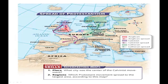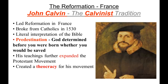You can see on the map the spread of Protestantism — it started in Wittenberg, spread up to Sweden, and some folks in Switzerland heard about it and started the Calvinist movement in France. It went up into Scotland as well. John Calvin led the Reformation in France. He broke from the Catholics in 1530 after reading about Martin Luther. He agreed with a literal interpretation of the Bible but had a new idea called predestination — where God determined before you were born whether you would be saved and go to heaven or go to hell. His teachings further expanded the Protestant movement, and his followers were called Calvinists.